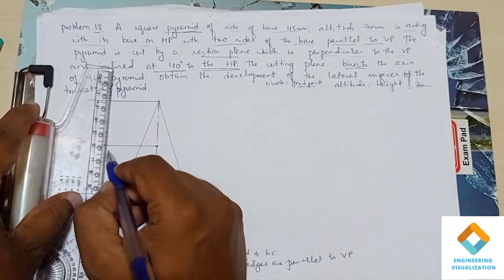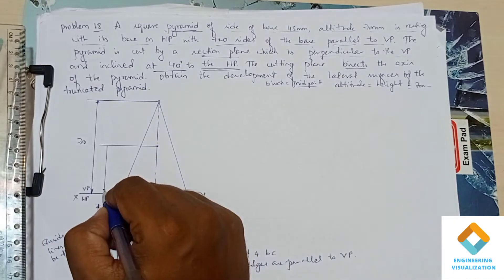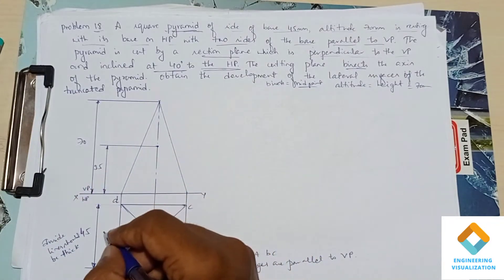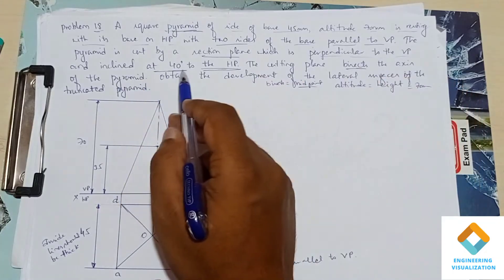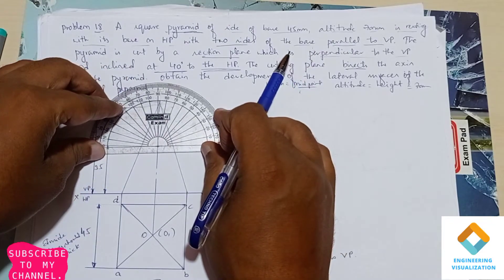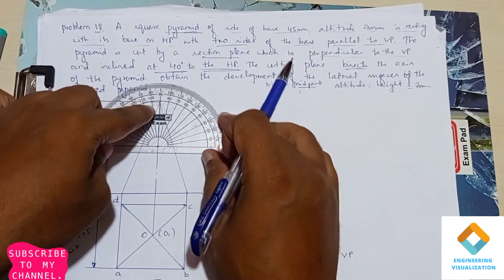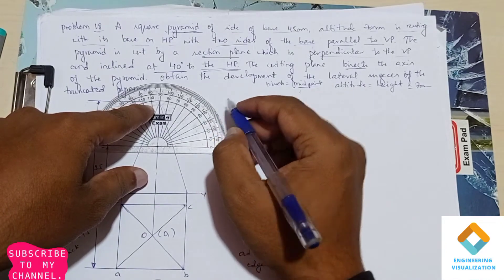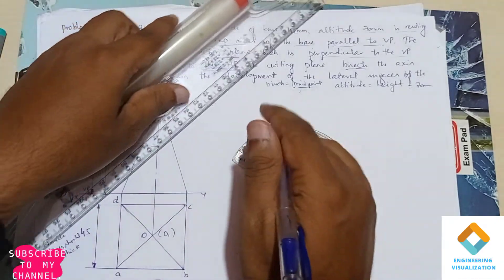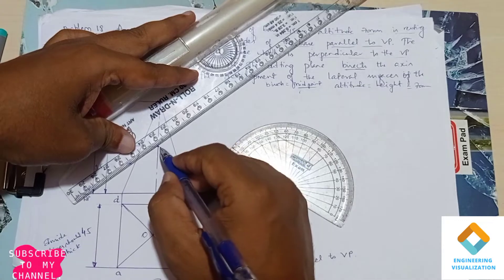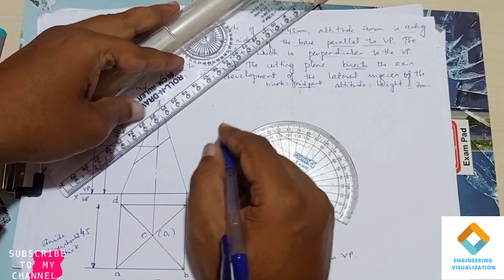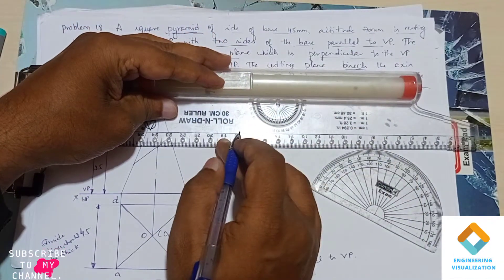Mark the midpoint at 35mm on the front view and draw an angle line at 40 degrees. Extend that line to show it is cutting at a 40 degree angle, and indicate the angle on the drawing.